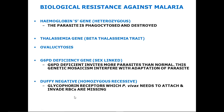The Duffy-negative homozygous recessive state also confers resistance against malaria. Those people who are Duffy-negative have missing glycophorin receptors, which are required for plasmodium vivax to attach and invade RBCs. These are the conditions in which patients would be resistant against malaria.